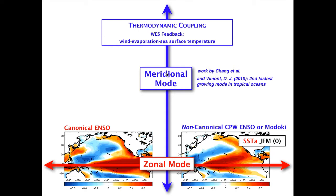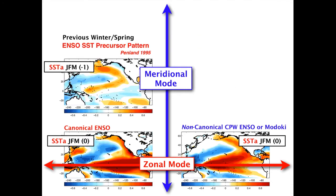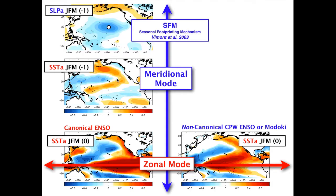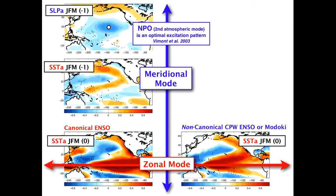The meridional mode dynamics have been linked to precursor patterns of ENSO. Perhaps the earliest study was Penland in 1995, which showed that the year before peak ENSO, a particular SST pattern developed in the extratropics. Later, Dan Vimont, with his seasonal footprinting work, showed this pattern is excited by variability in the atmosphere via the North Pacific Oscillation pattern. Mike Alexander also showed this is a nice precursor of ENSO variability. And as was pointed out yesterday, the Central Pacific ENSO also has a precursor in the extratropics that looks very similar to this NPO SST pattern.